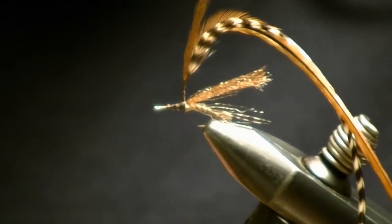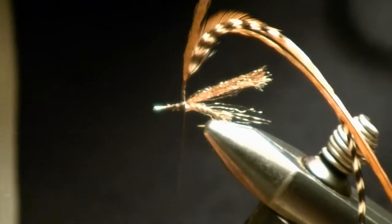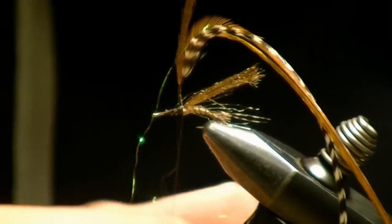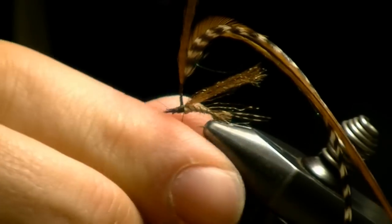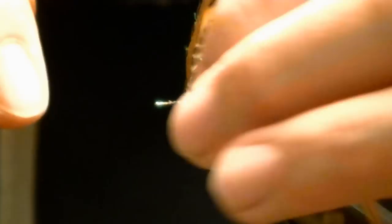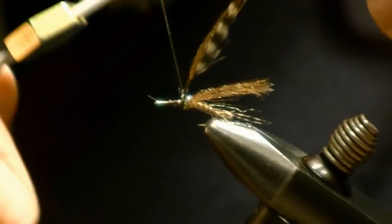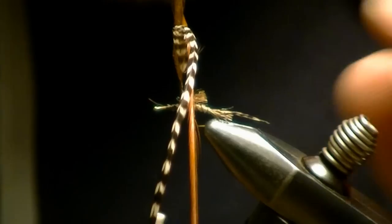Let's take a really tiny amount of ice dub pheasant tail color, just a couple of strands here, once you dub it on it'll be plenty. Make your wraps behind, clip this rear antron nice and short.